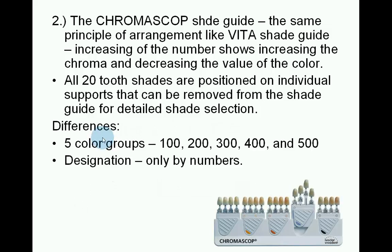The Chromascope shade guide uses the same principle of arrangement as the Vita shade guide: increasing number indicates increasing chroma and decreasing value. All 22 shades are positioned on individual supports that can be removed from the shade guide for detailed shade selection. The difference is that it uses five colour groups: 100, 200, 300, 400 and 500, with designation only by numbers.